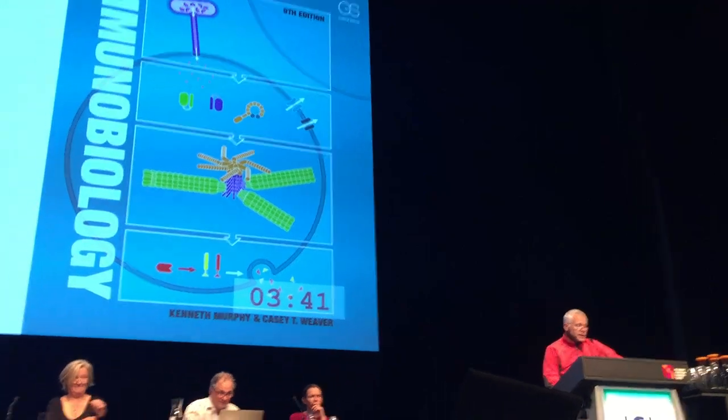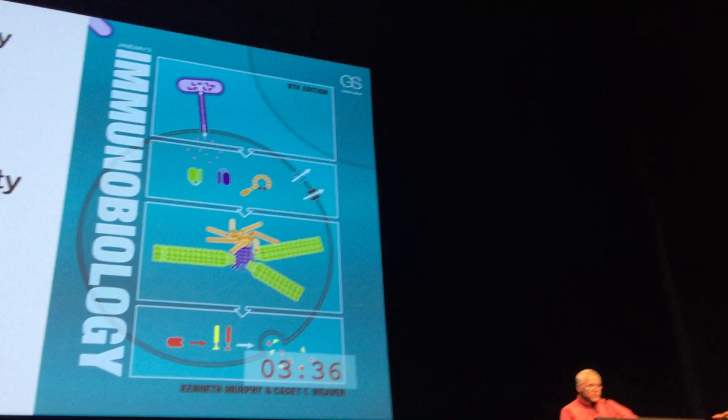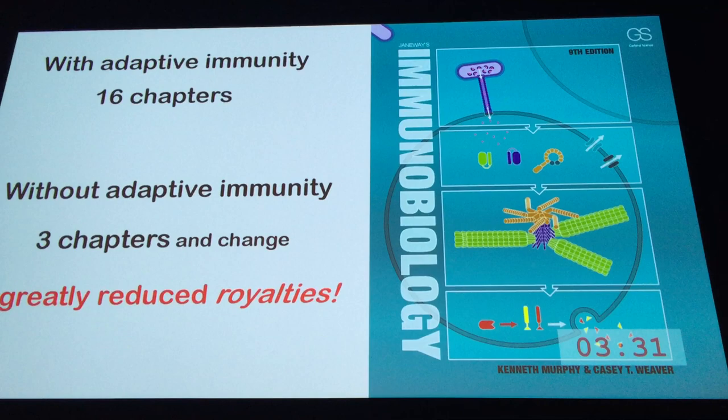Adaptive immunity — it's 16 chapters. Without adaptive immunity, it's three chapters and change. You know what it costs to sell a book with three chapters? You can't make any money.